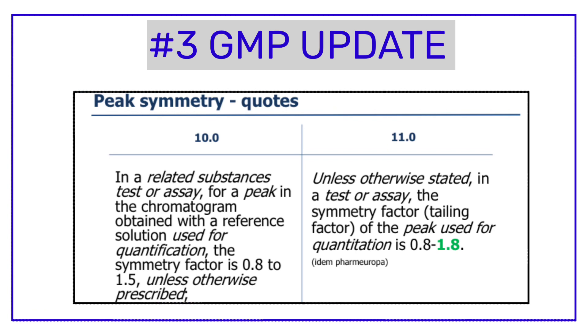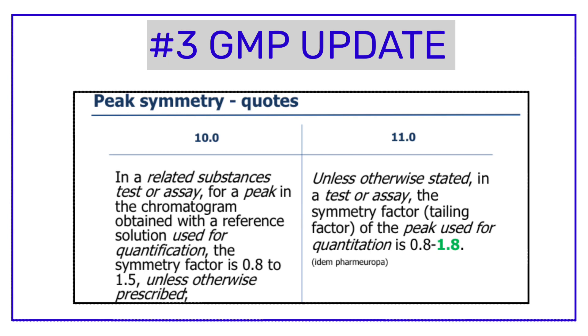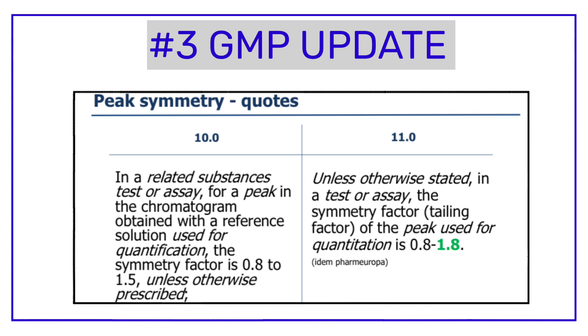As an example of the changes, you can see on screen that as per the 10th edition of the European Pharmacopoeia, the tailing factor limit was 0.8 to 1.5, whereas in the 11th edition the limit for the tailing factor will be 0.8 to 1.8 unless otherwise specified in your test method. You can check other comparison details in the 22-page document — a link has been provided in the description.